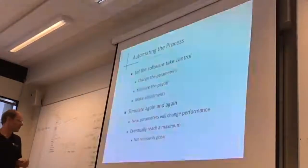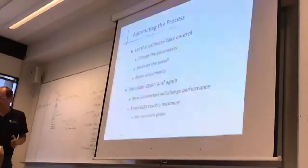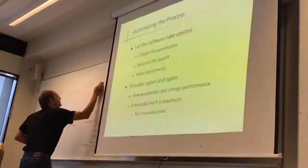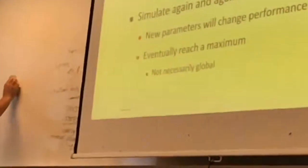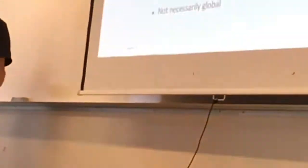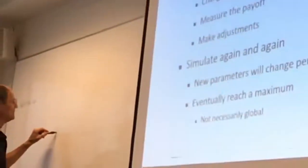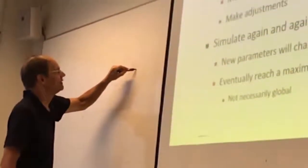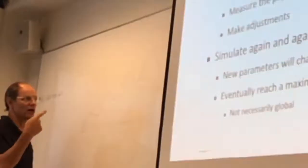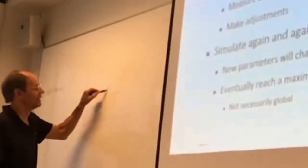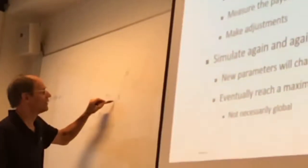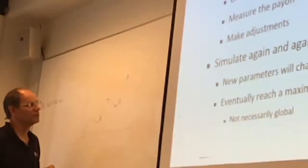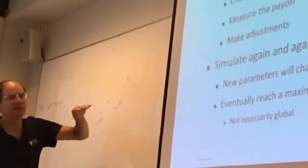We let the software take control — it changes the parameters, measures the payoff, makes adjustments, simulates a bunch of times. After 36 simulations, the new parameters change performance and eventually it reaches something it thinks is the maximum. One of the points of Powell especially is it's not necessarily a global maximum. If you have a function in one dimension that has multiple peaks, depending on where you start it, the algorithm might end up at a local optimum rather than the global optimum.